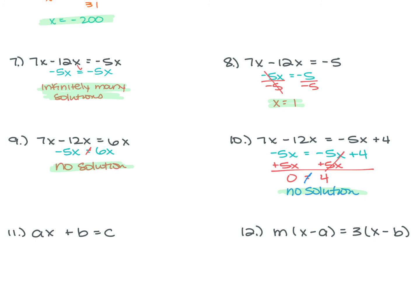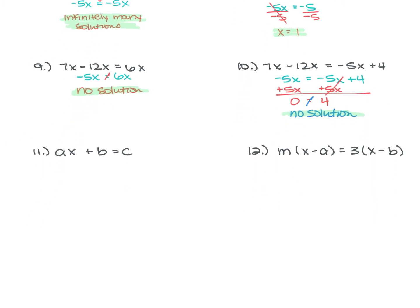For problems 11 and 12, we solve for X. For number 11, we have AX plus B is equal to C. Get the AX by itself first — subtract B from both sides. So AX is equal to C minus B. Now divide both sides by A to get X by itself, and X equals C minus B divided by A.